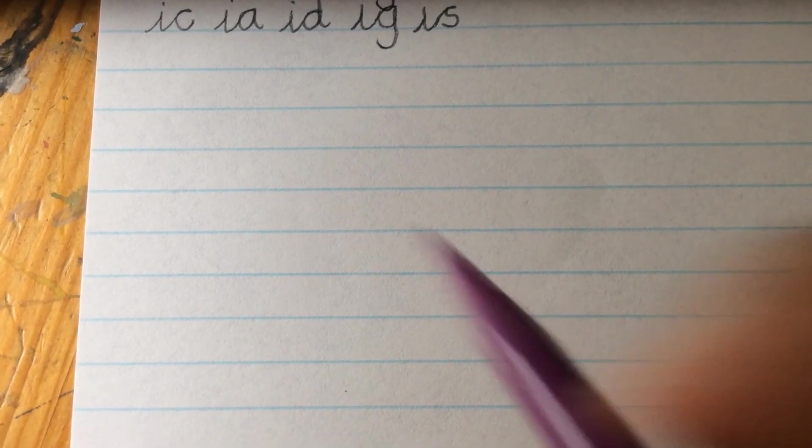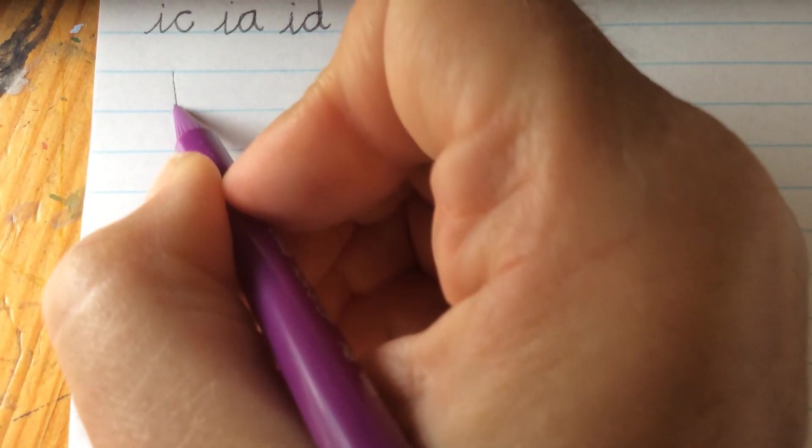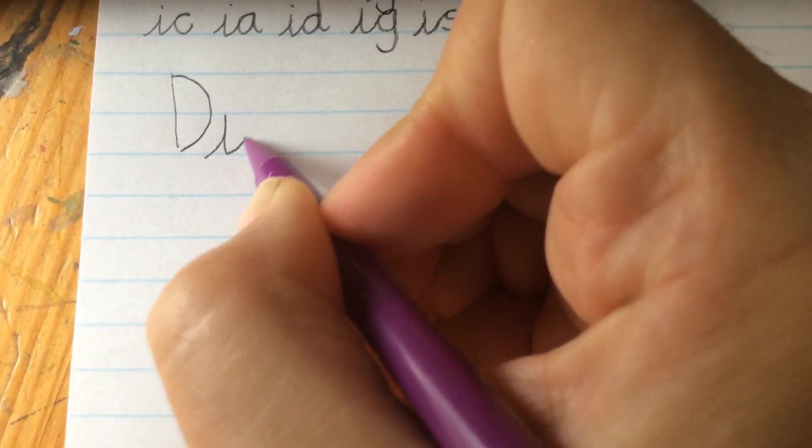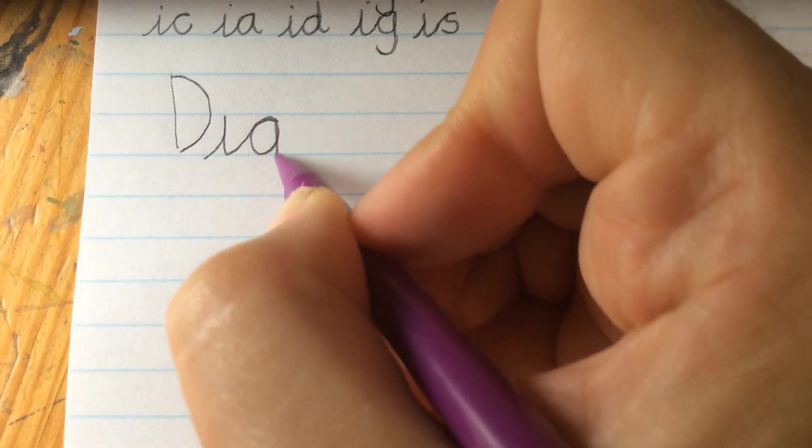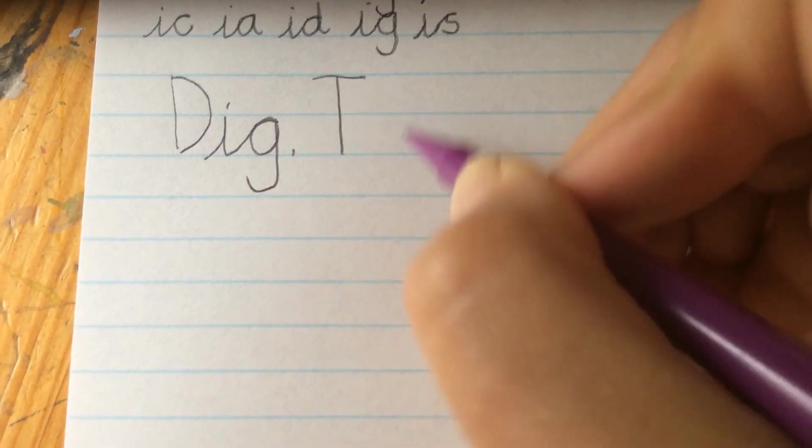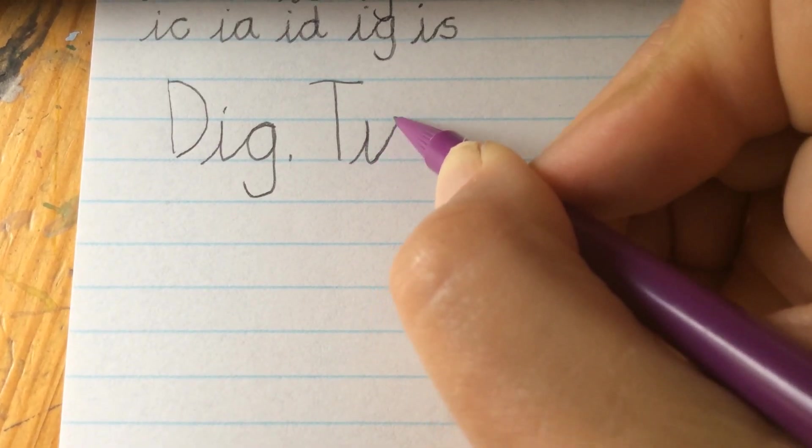Once you've practiced and you're happy with those two letter combinations, then we can start to put them together into sentences. We can begin using three lines just to make sure we're getting our letters correctly sized, doing those diagonal joins correctly, and keeping all those small letters